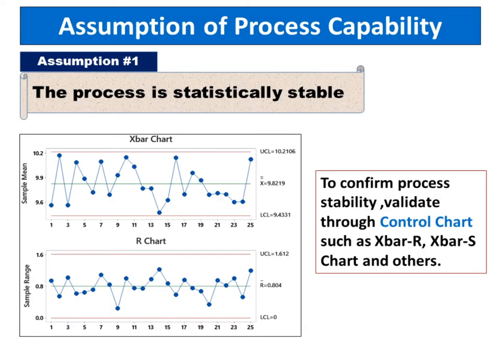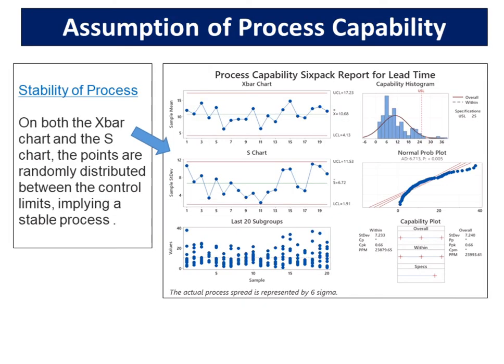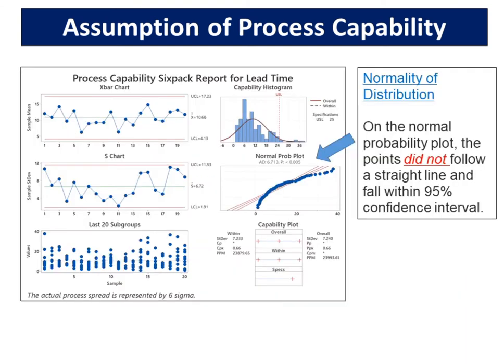Before performing a process capability study, verify whether the process is statistically stable and normality of distribution. The first assumption is the process is statistically stable. To confirm process stability, validate through control charts such as X-bar R, X-bar S chart and others. The second assumption is that the individual measurement from the process conforms to the normal distribution. To confirm normality, validate through a normal probability plot. On both the X-bar chart and the S-chart, the points are randomly distributed between the control limits, implying a stable process. On the normal probability plot, the points did not follow a straight line and fall within the 95% confidence interval.